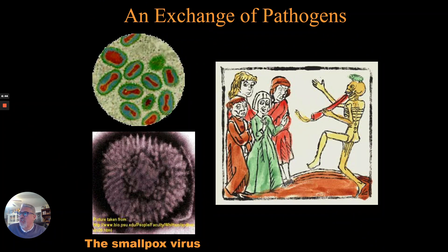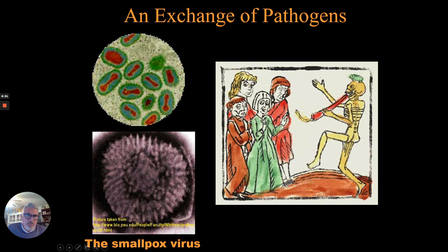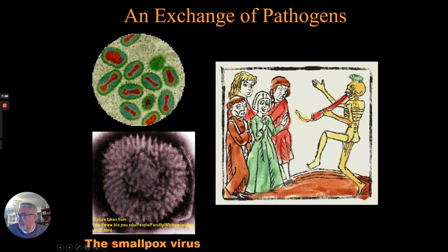So, exchange of diseases — let's talk about diseases. The first exchange is going to be of pathogens. On the negative things that the Europeans brought to the new world: smallpox, mumps, measles, typhus, and chickenpox.